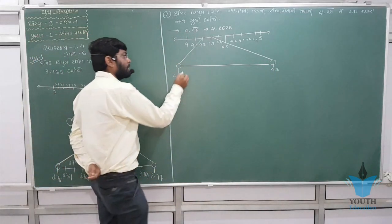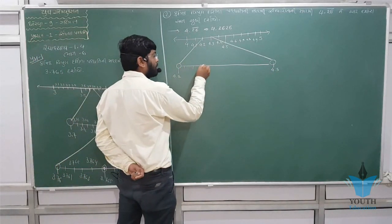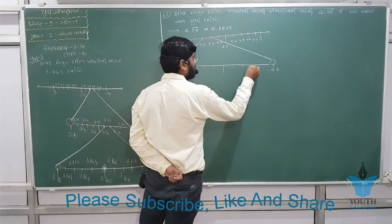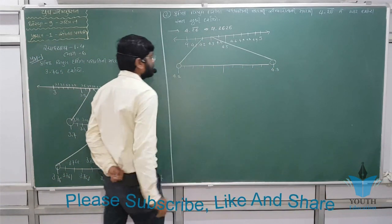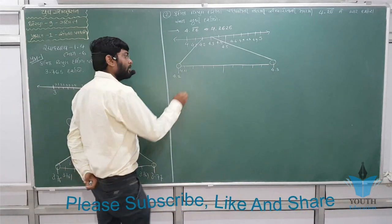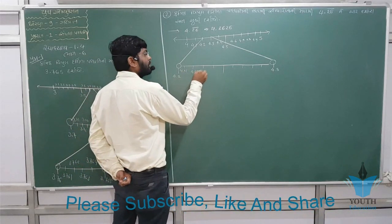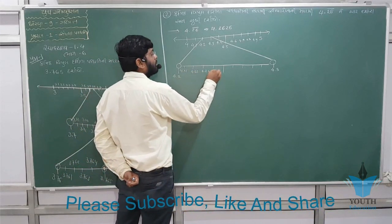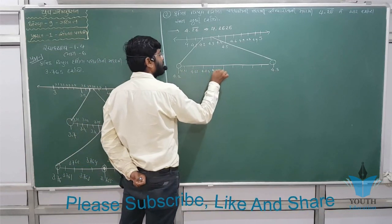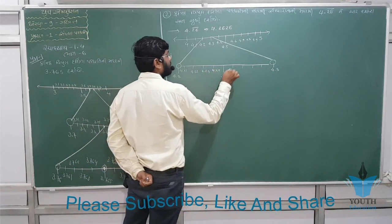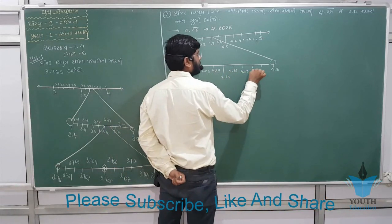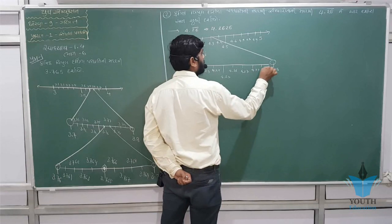4.3 — 1, 2, 3, 4, 5, 6, 7 and 9 meters. 4.2 and 4.3 — 1, 2, 3, 4, 5, 6, 7, 8, 11.